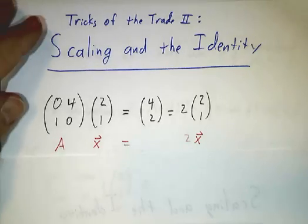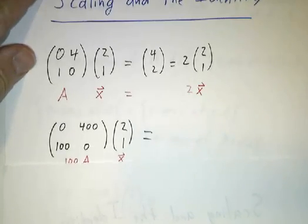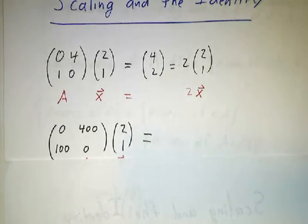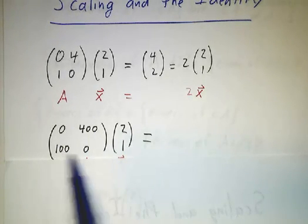So far, so good. But what if instead of giving you (0,4,1,0), I'd given you (0,400,100,0)?